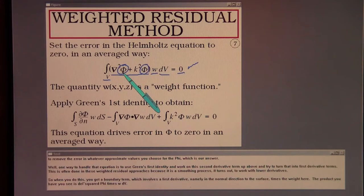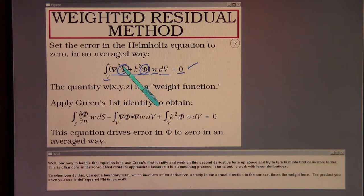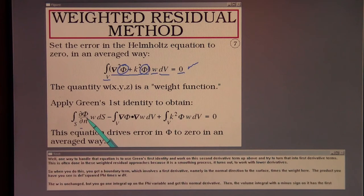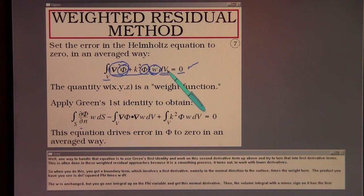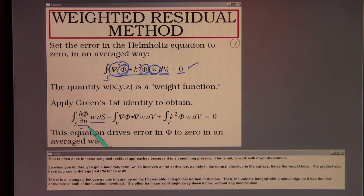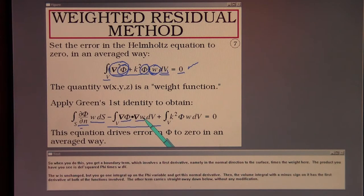This is often done in these weighted residual approaches because it's a smoothing process to work with lower derivatives. When you do this, you get a boundary term involving the first derivative in the normal direction to the surface times the weight. The product ∇²φ·w dV becomes a normal derivative term. Then the volume integral with a minus sign has the first derivatives of both functions involved. The other term carries straight down below without modification.